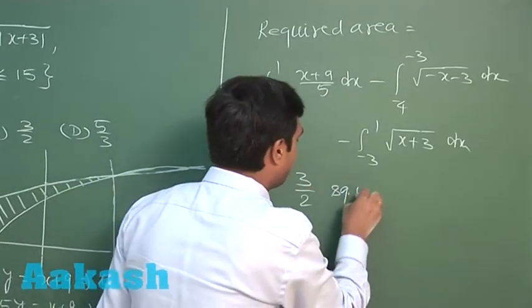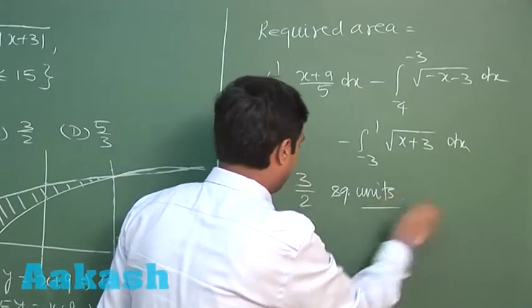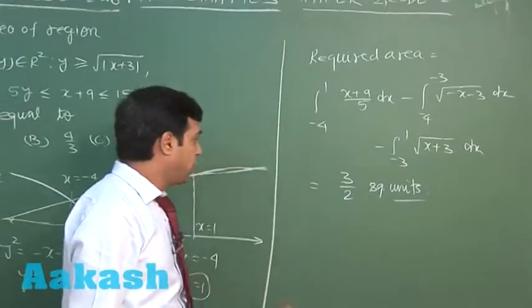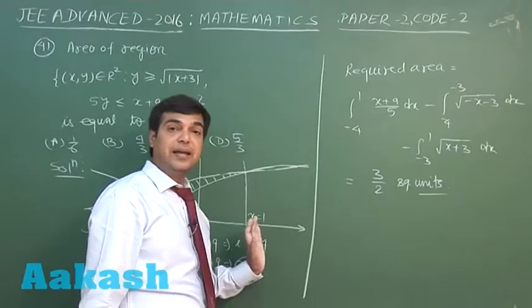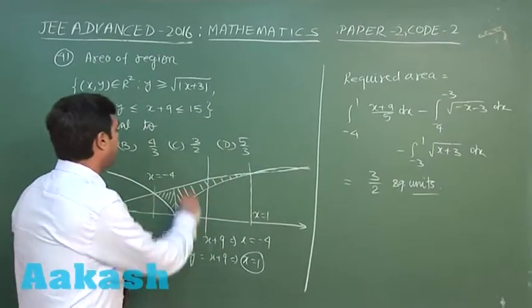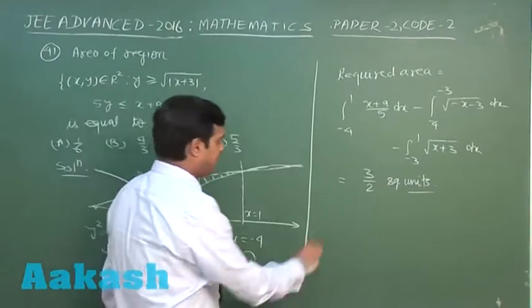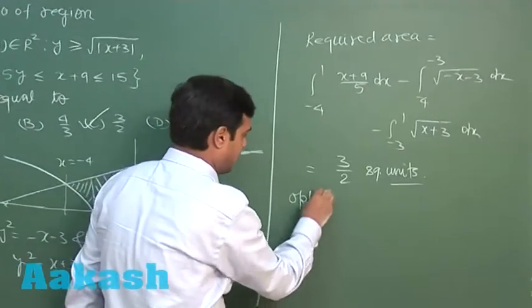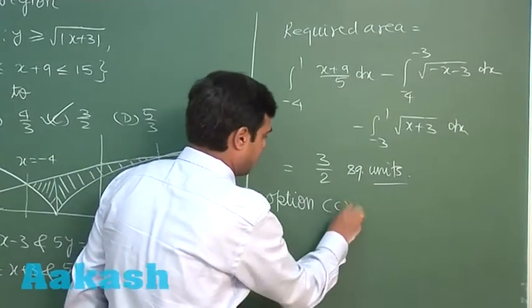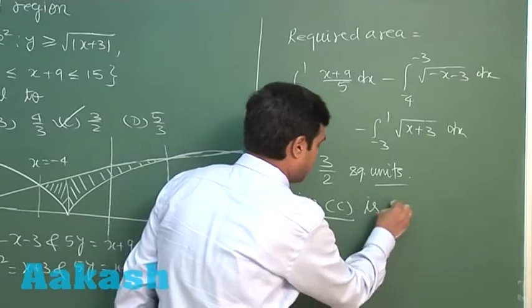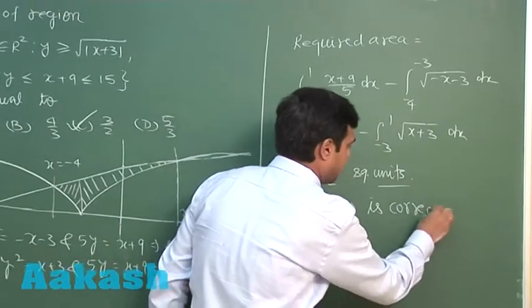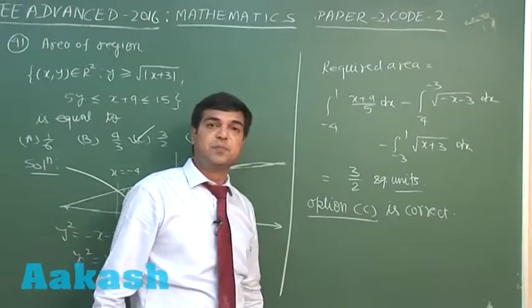So solving this one, we simply get the required area as 3/2 square units. So this is clear, so we can find the required area and we can see from the given options, option C is correct. Okay, let us move to the next one.